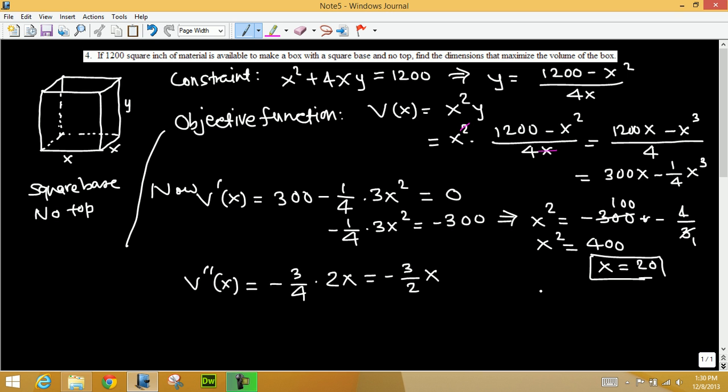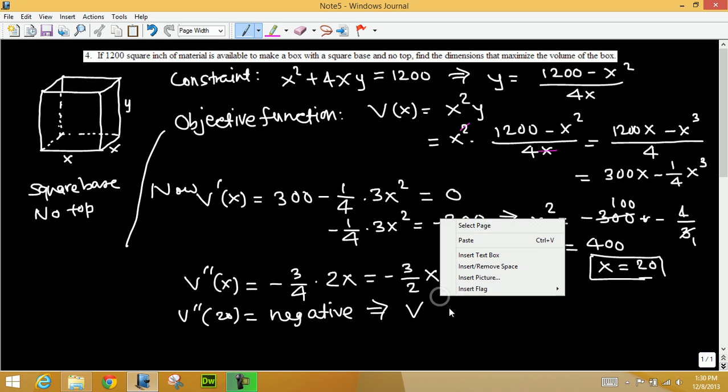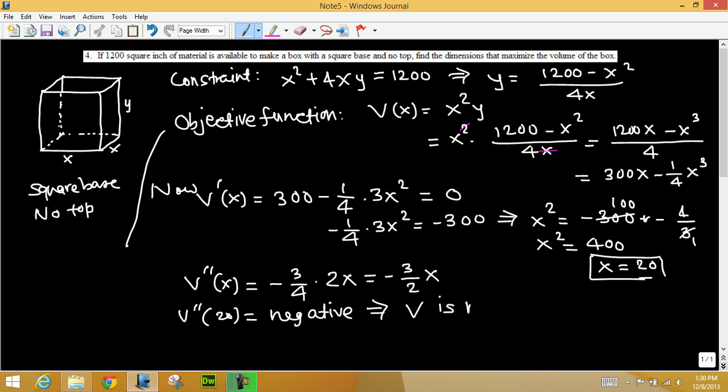Okay, V double prime, second derivative at 20, when we plug in x equals 20 we're going to get negative, and I don't need the value, all I need is the sign. So it's negative. That implies V, the function, second derivative negative means the function V is maximum at 20.